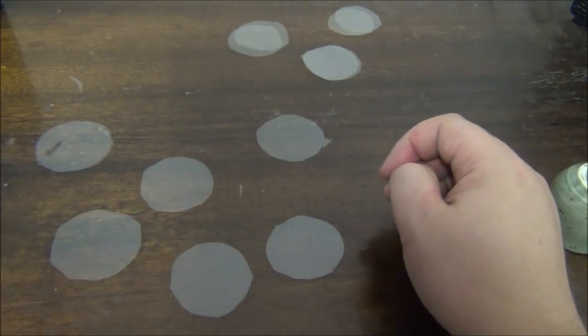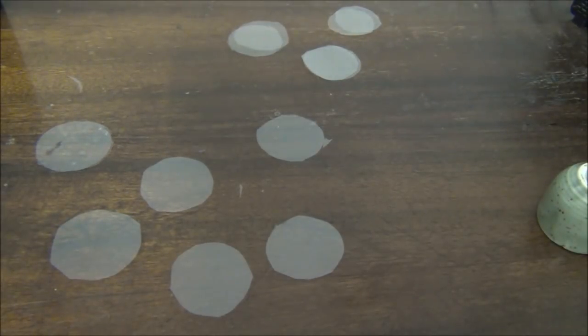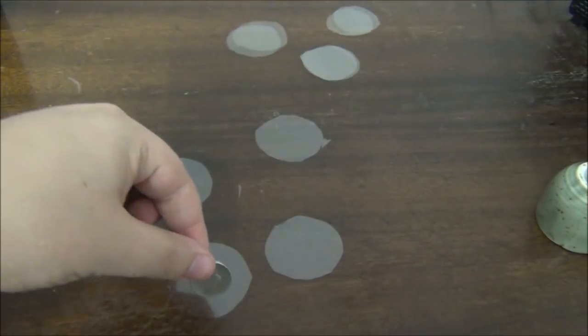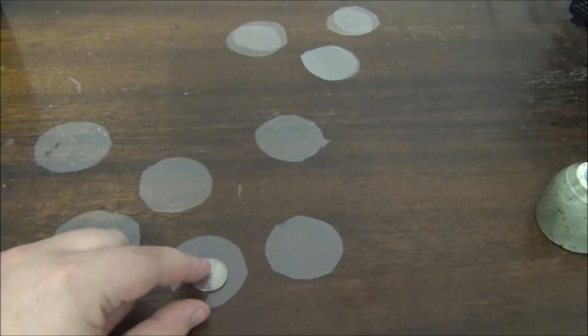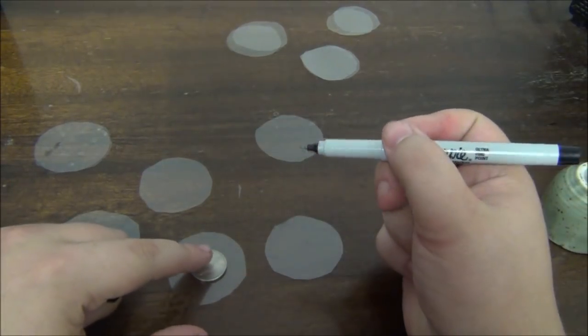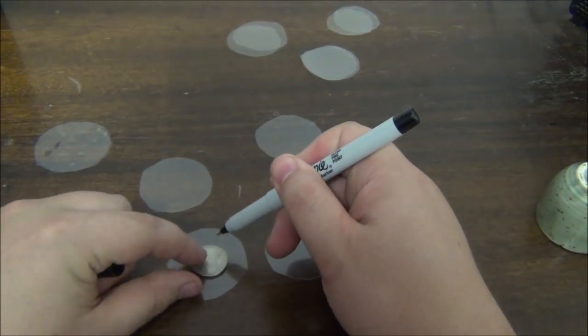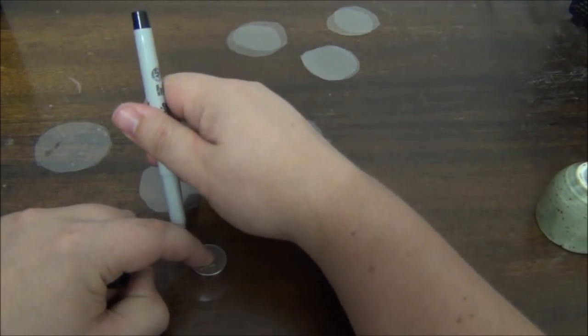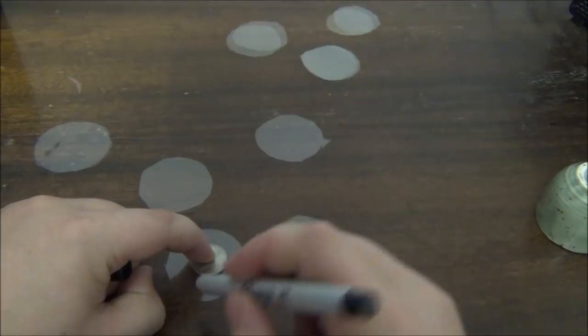So grab some coins. I'm using a penny, a nickel, and a quarter. These give a decent range of sizes for that central spot. For each group of six plastic circles, use only one of the coin sizes. Trace the outline of the coin in the center of each circle, and then shade it in with a permanent marker. What we're going to end up doing is stacking all of these circles together to make sure that as little light as possible gets through the middle.